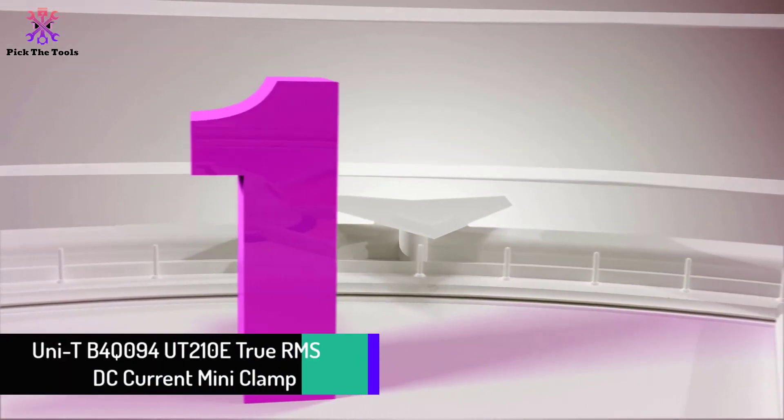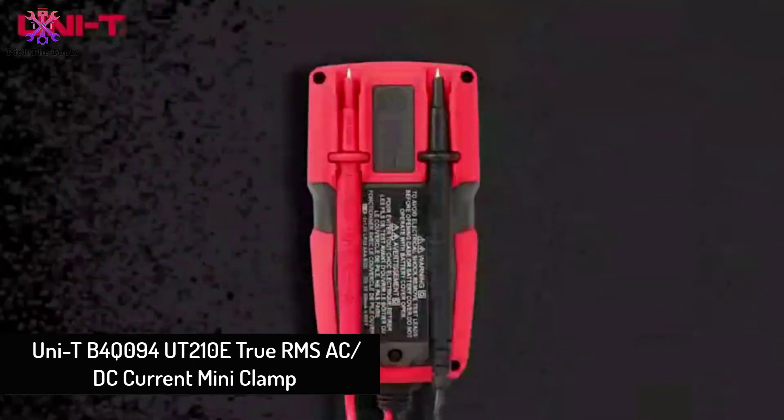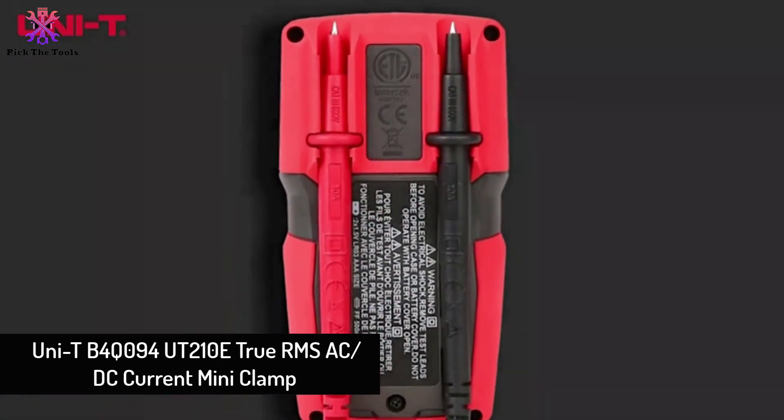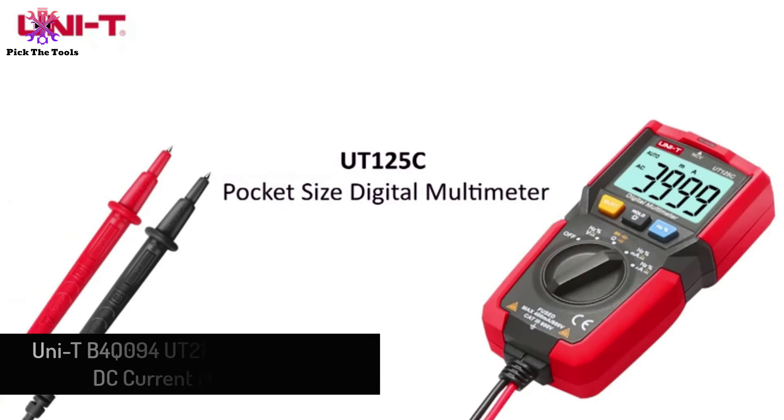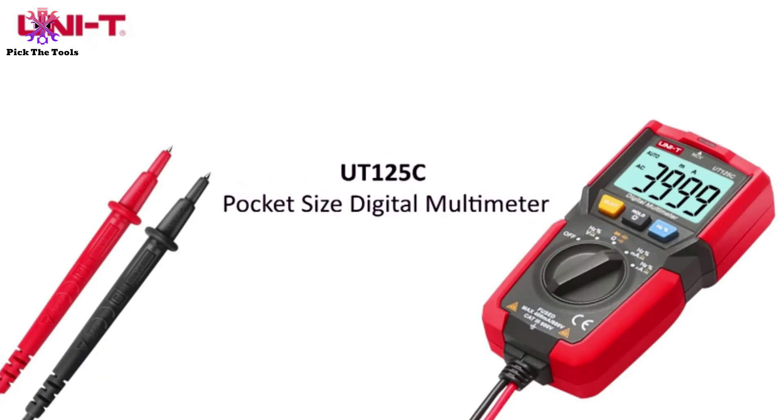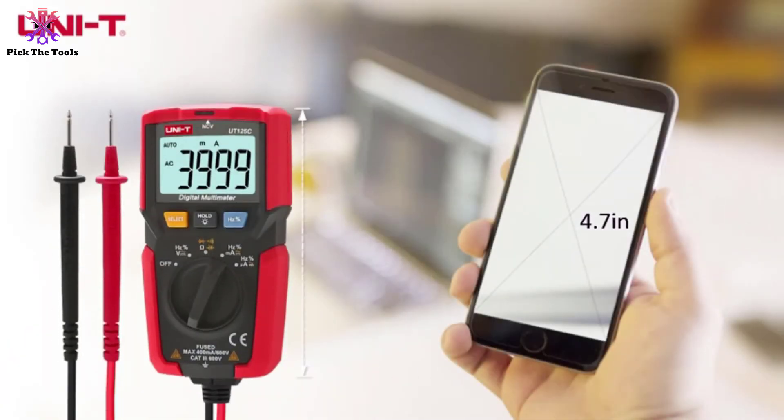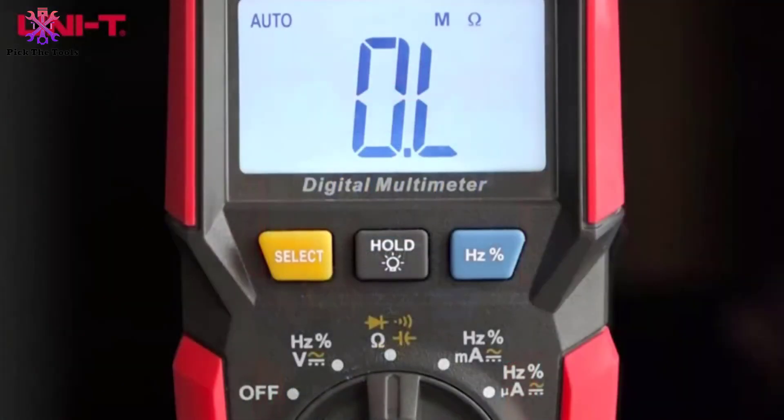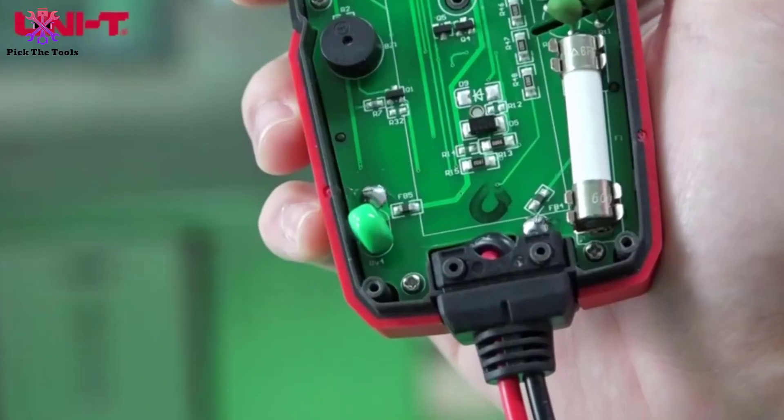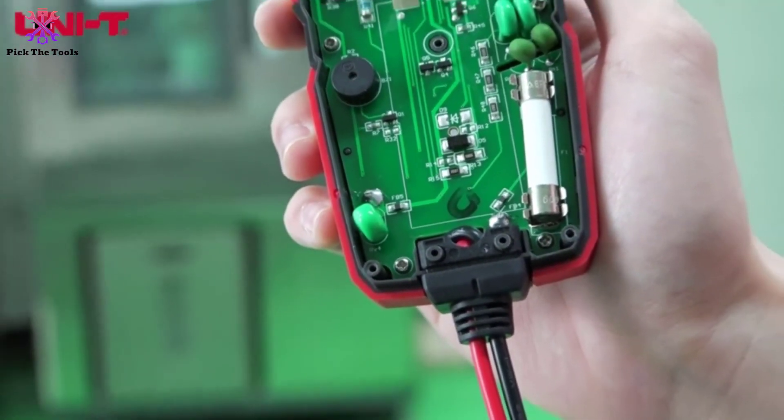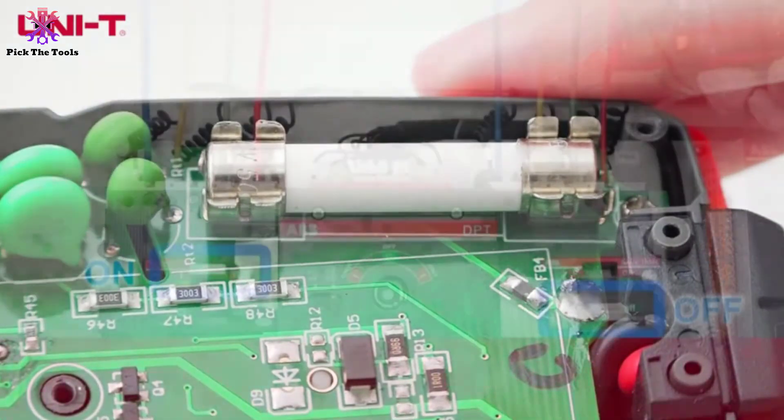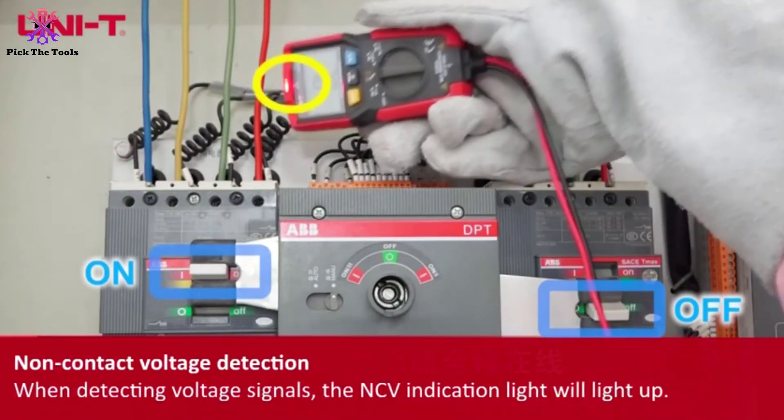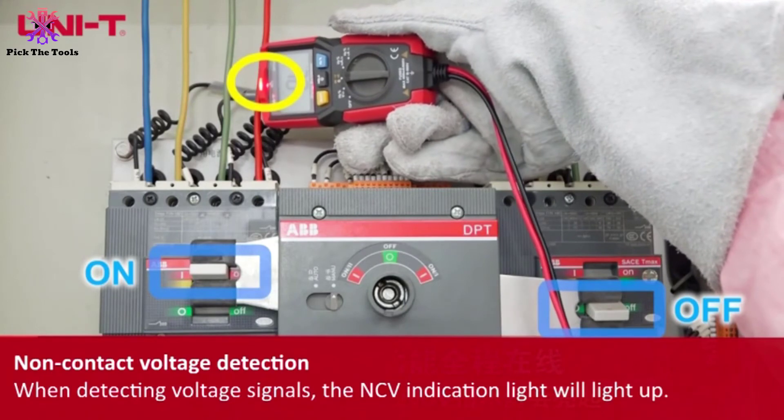And finally, at number one, we have the UNI-T UT210E True RMS AC/DC current mini clamp meter. UNI-T is another all-rounder clamp meter with excellent accuracy. It is one of the most affordable clamp meters in our list with all the essential features you'd expect. It comes with standard construction at an affordable price, and it is an excellent addition to the electronic toolbox. UNI-T is designed to measure current and to make easy measurements, and divides it into three sets of ranges: 0 to 2A, 0 to 20A, and 0 to 100A.